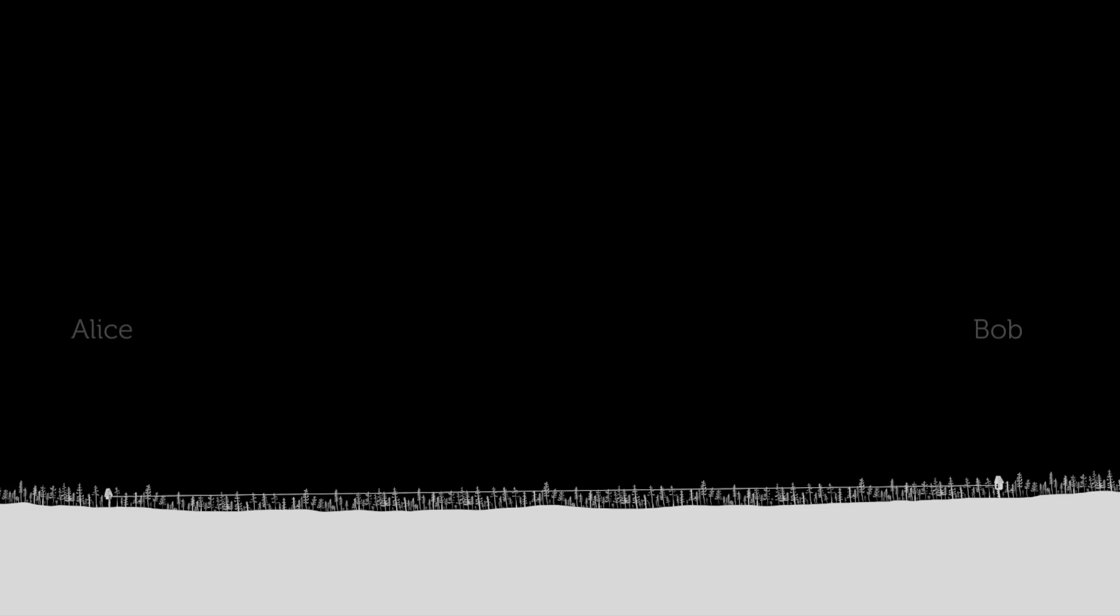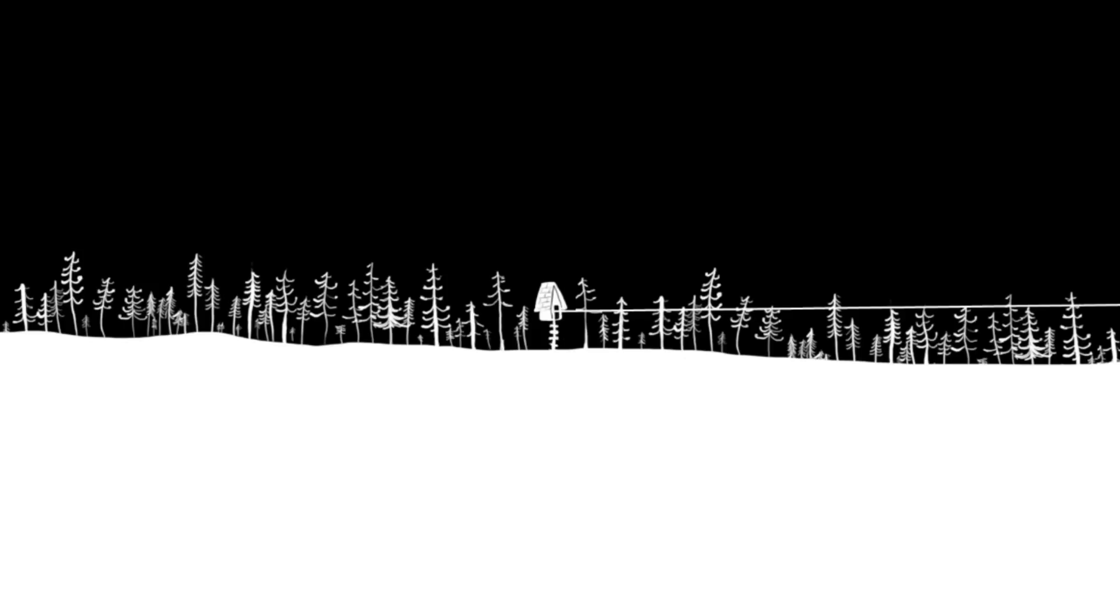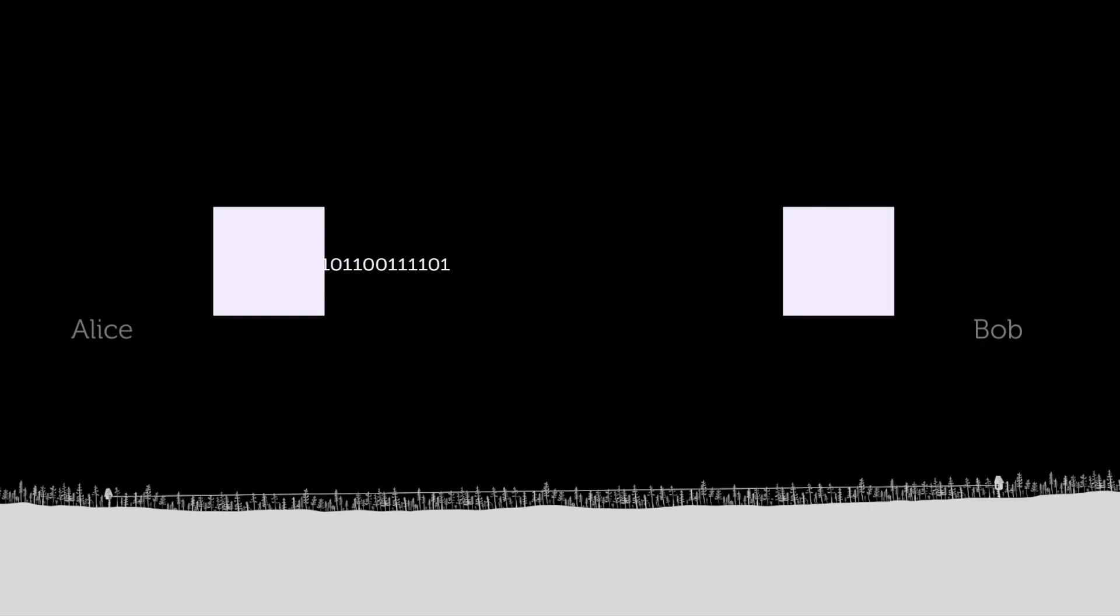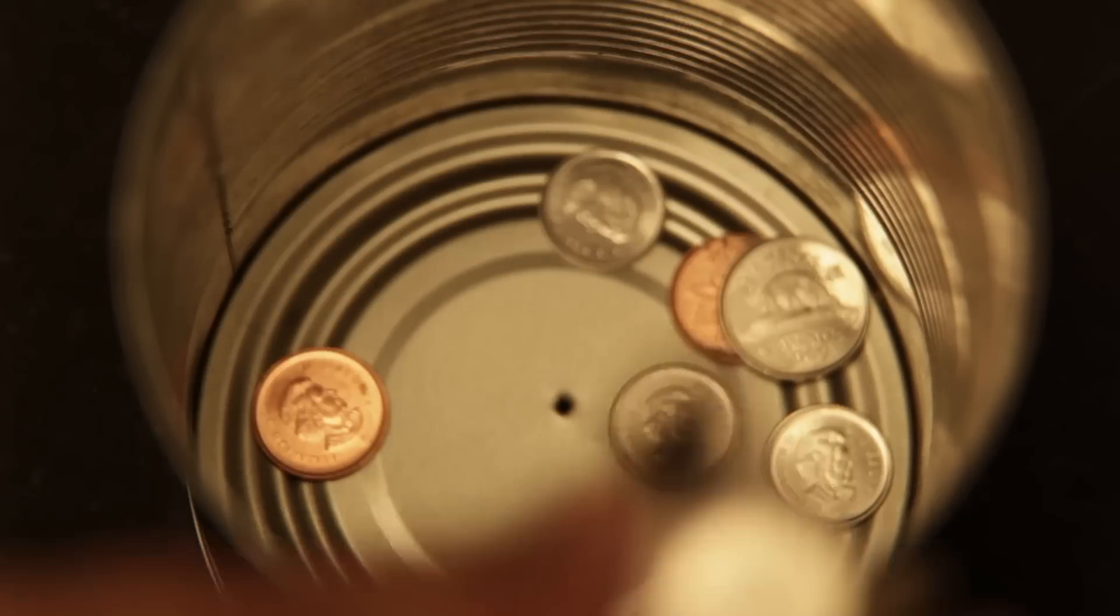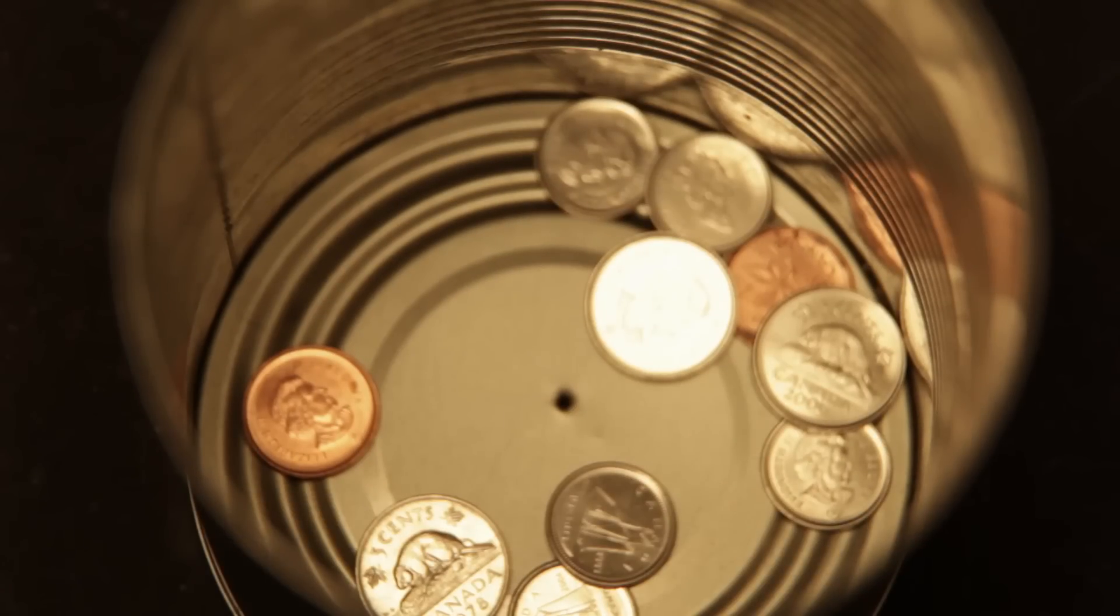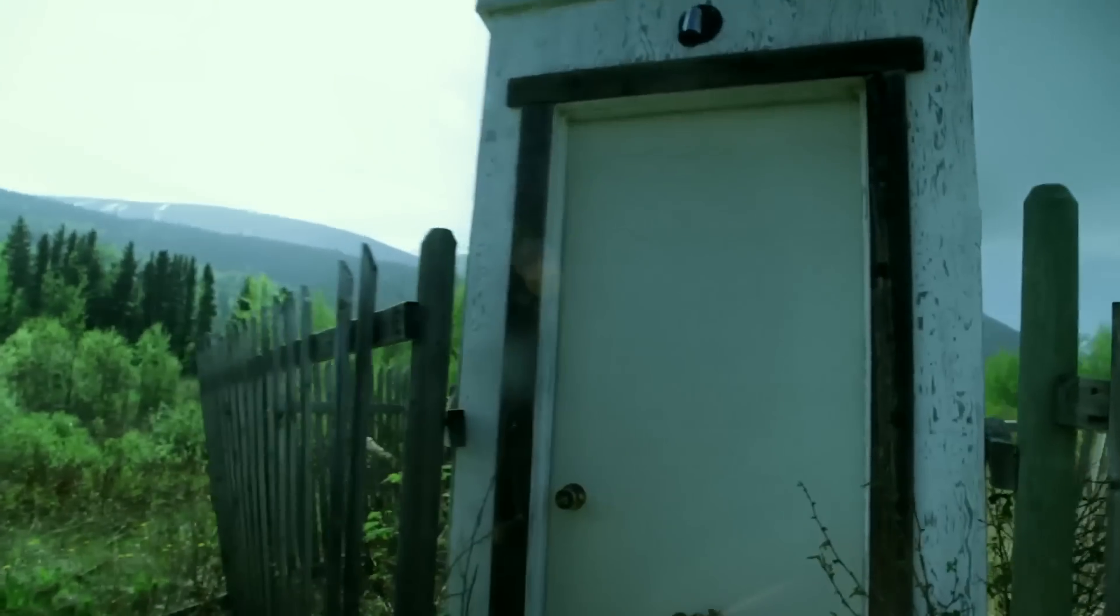Consider the following challenge. Alice and Bob can transmit and receive messages in binary. They charge their customers one penny per bit to use their system. A regular customer arrives who wants to send a message, and their messages are 1,000 symbols long. The meaning of the messages is completely unknown.